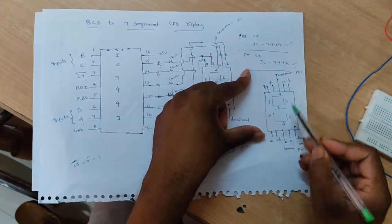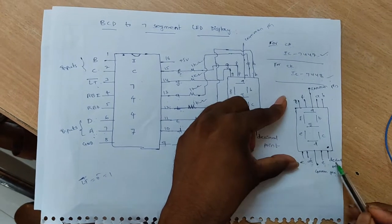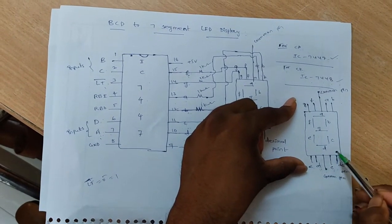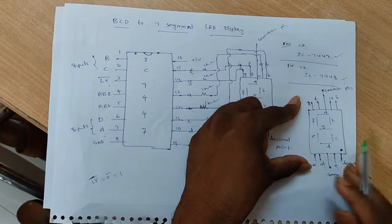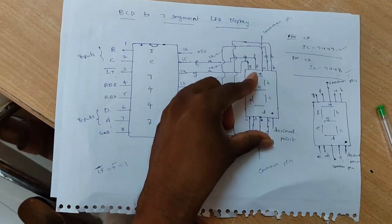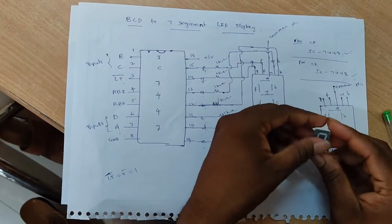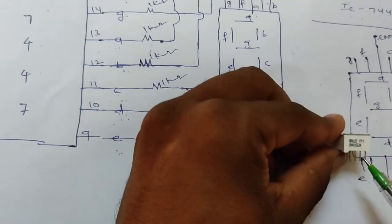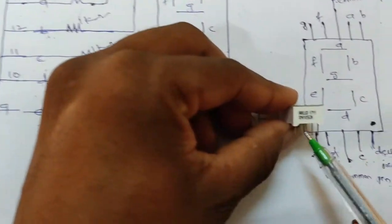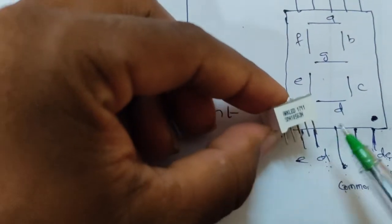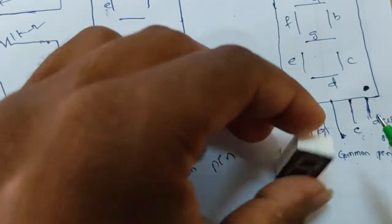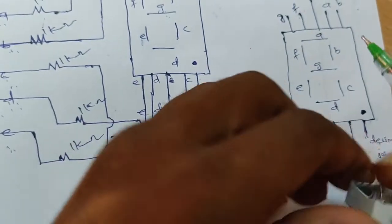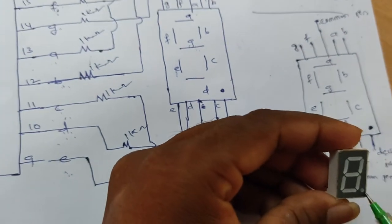The segment pins are G, F, A, B, E, D, C, and the last pin is the decimal point. This is the 7 segment LED display with bottom 5 pins and top 5 pins. The last pin is the decimal point.